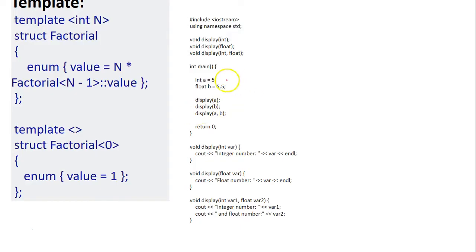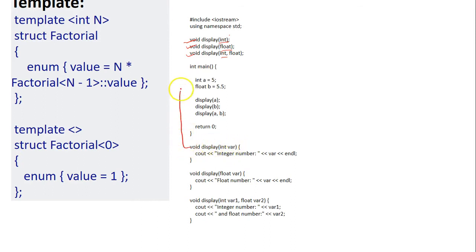Looking at the example of function overloading: I have a function named 'display' with different forms. The return type of all three functions is the same, but they differ in arguments — one takes int, one takes float, one takes both int and float. This is why it's called compile-time polymorphism: when you call the function, the compiler checks the argument to determine which version to call.